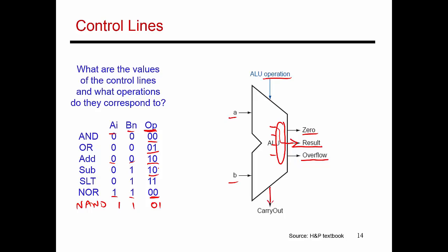If I want to do a subtraction, I'm taking the result of the adder, but the value of B gets inverted, and I provide a carry-in of 1, which automatically happens by setting this bit to be 1.